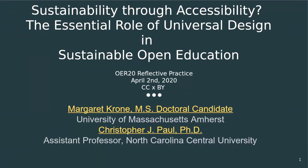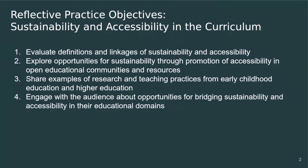Today we're going to be talking about — the title of our talk is Sustainability through Accessibility: the Essential Role of Universal Design and Sustainable Open Education. This presentation will address the theme of sustainable open education communities by investigating the opportunities of multidimensional sustainability through accessible educational resources. Today in our reflective practice, we have four objectives. The first is to evaluate definitions and the linkages of sustainability and accessibility. Explore opportunities for sustainability through the promotion of accessibility in open educational communities and resources. Share some examples of research and teaching practices from early childhood education and also higher education in general. And engage with the audience about opportunities for bridging sustainability and accessibility within their own educational domains.